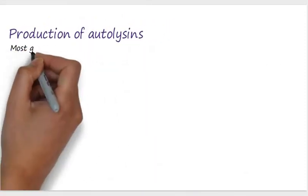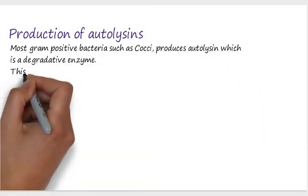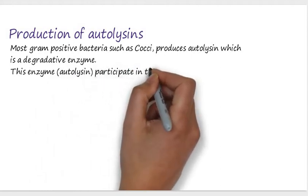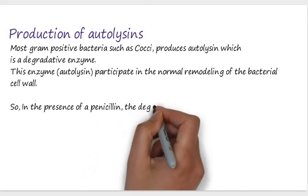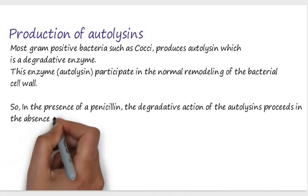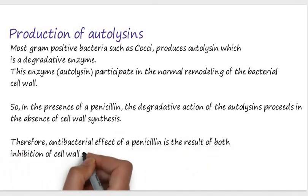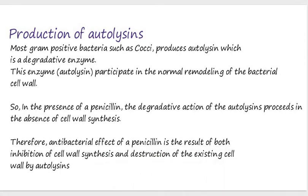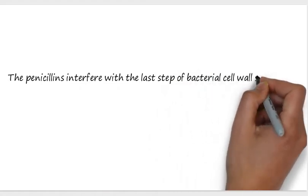The third mechanism is production of autolysins. Most gram-positive bacteria such as cocci produce autolysins, which are degradative enzymes that participate in the normal remodeling of the bacterial cell wall. In the presence of penicillin, the degradative action of autolysins continues in the absence of cell wall synthesis. Therefore, the antibacterial effect of penicillin results from both inhibition of cell wall synthesis and destruction of the existing cell wall by autolysins. In summary, penicillin interferes with the last step of bacterial cell wall synthesis — transpeptidation or cross-linkage — resulting in exposure of the osmotically less stable membrane, and cell lysis can occur through osmotic pressure or activation of autolysins.